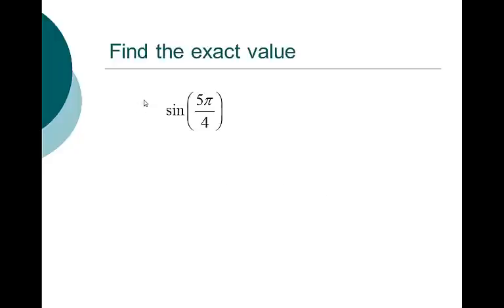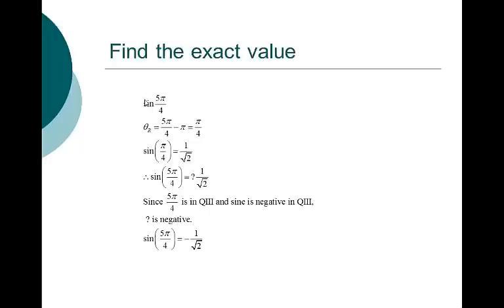Sine of 5 pi over 4: you should recognize the reference angle as pi over 4 rather quickly. The sine of pi over 4, the sine of 45 degrees, is 1 over the square root of 2. Since 5 pi over 4 is in quadrant 3 and sine is negative there, we end up with negative 1 over the square root of 2. If we're talking about the 45-degree angle in quadrants 3 or 4, the sine is negative; in quadrants 1 or 2, the sine is positive.